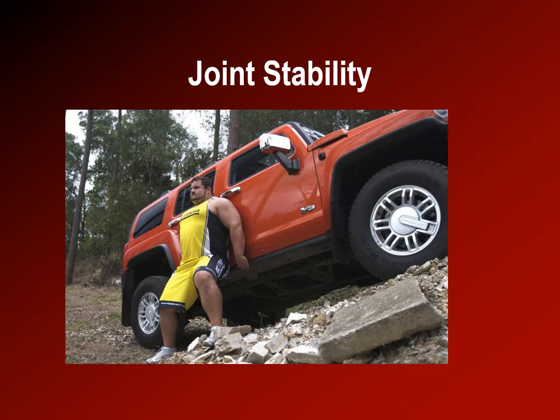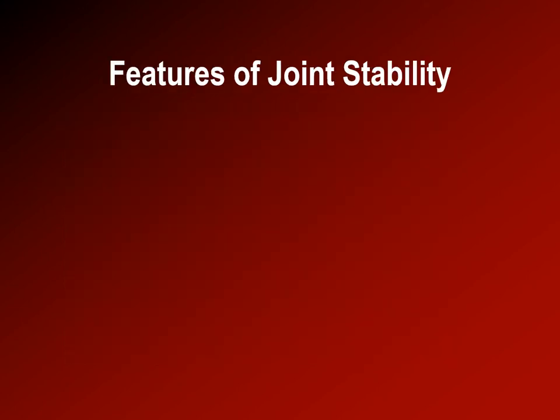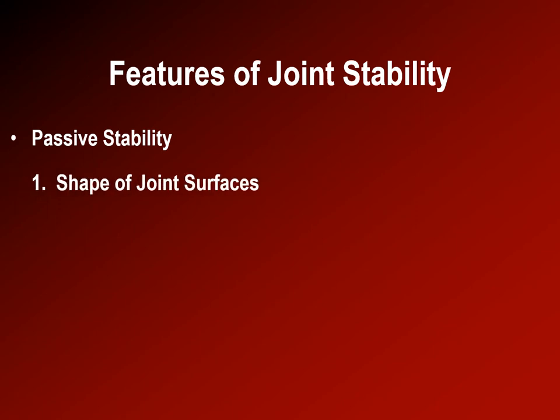Joint stability comes from several features. Passive stability comes from the shape of the joint surfaces — for example, the glenoid fossa of the shoulder is very shallow, making the glenohumeral joint the most mobile joint in the body, whereas the acetabulum of the hip is much deeper, making the hip a much more intrinsically stable joint. This is called form stability.